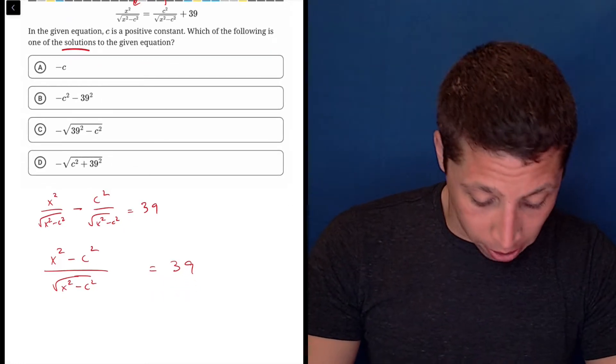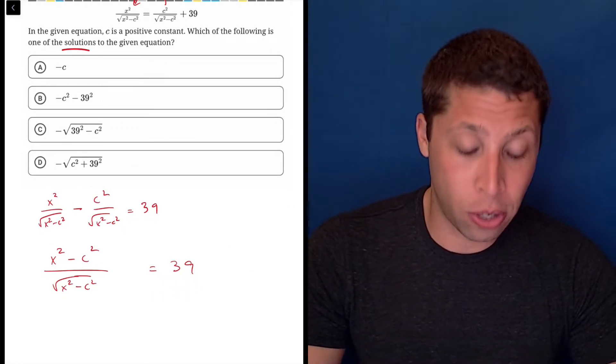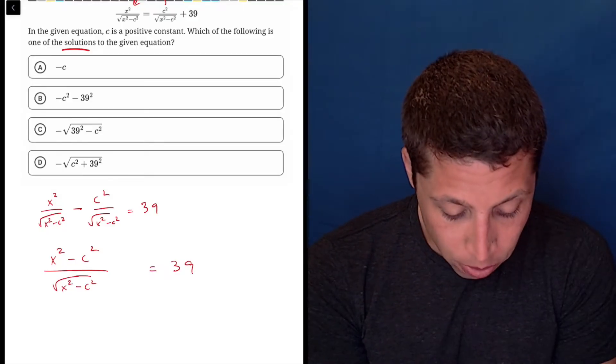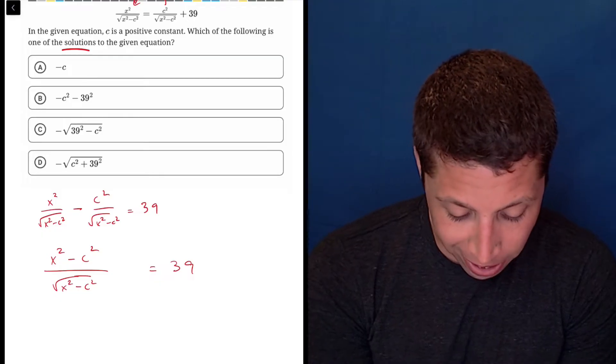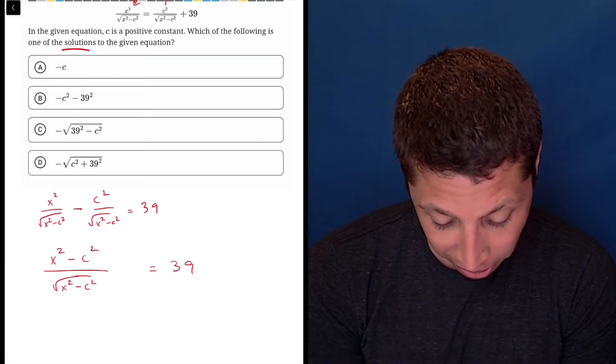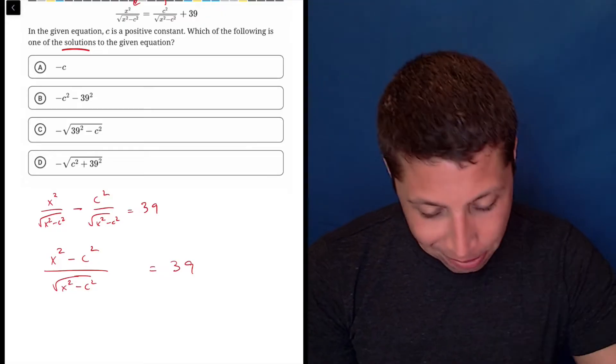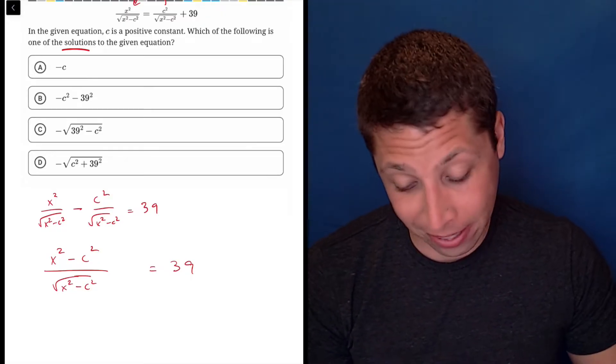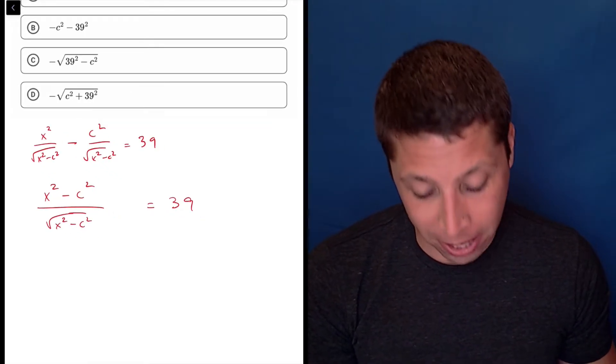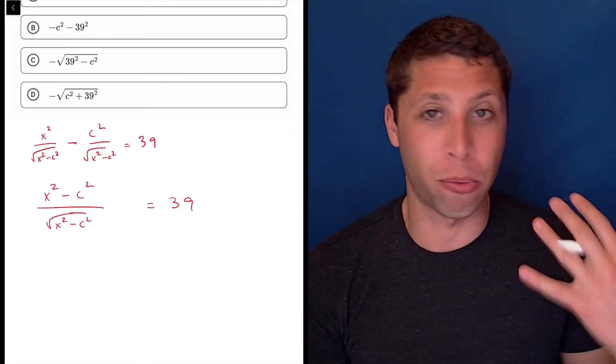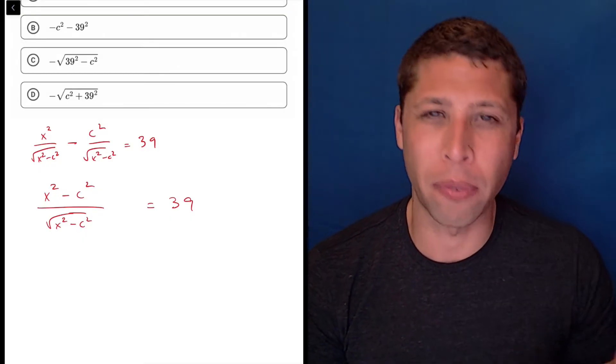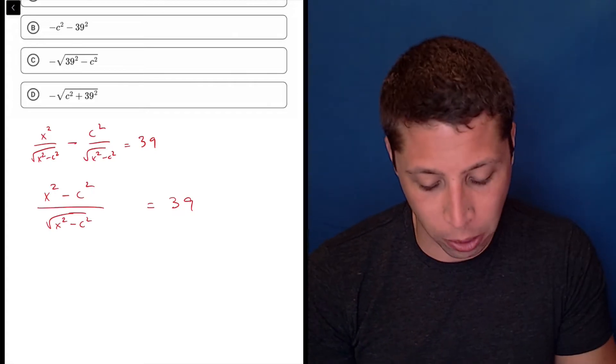From here, you might be tempted to get rid of the fraction by multiplying, and I guess you can do that, but I don't know. It's such a mess, this whole thing. What I would do here, maybe this isn't even the right call, is I would try to rationalize the denominator. Basically, in math, we don't like it when there's a radical in the denominator of a fraction. There's lots of reasons for that, but just take my word for it.